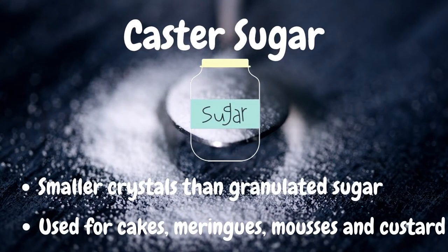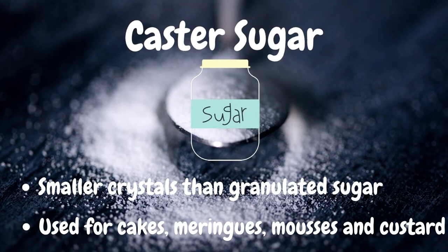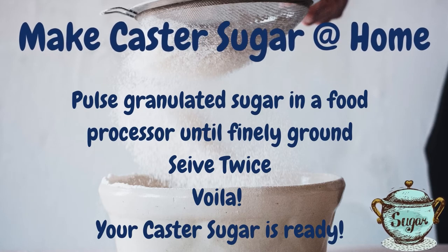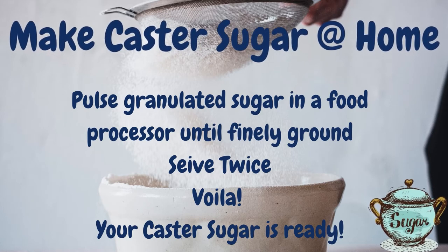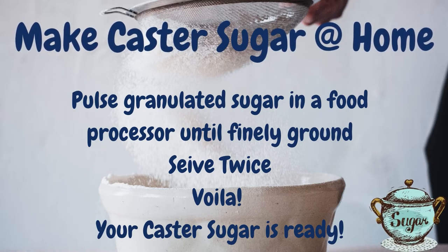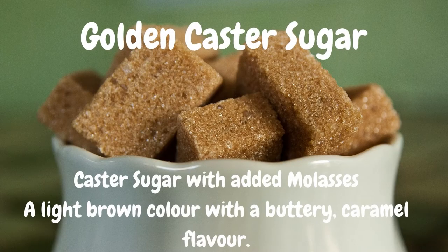Caster sugar is also another common sugar. It's made from granulated sugar, but it has much finer, smaller crystals, and it's used for making cakes, meringues, mousses, and custard. If you don't have caster sugar at home, you can easily make it yourself by putting some granulated sugar in a food processor until it's finely ground, sieved twice — and there you have it, you've made caster sugar at home.